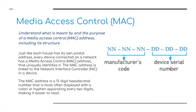Let's start with Media Access Control — a MAC address. The syllabus requires us to understand the purpose of a MAC address, including its structure. It's basically 12 numbers, all broken apart by hyphens or by a colon. The first six digits are for the manufacturer's code, e.g. Apple, and the last six digits are the device's unique serial number.